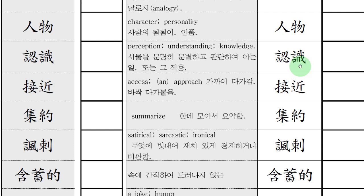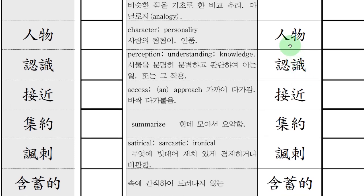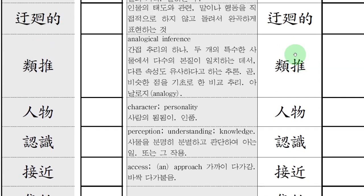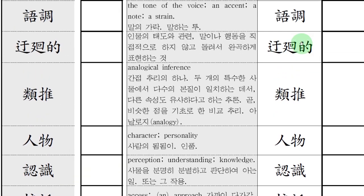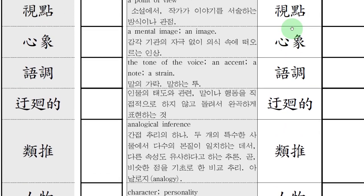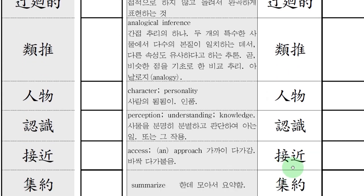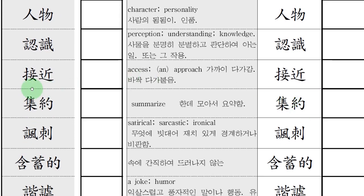위로 한번 읽어볼까요? 인식. 인물. 유추. 우회적. 어조. 심상. 시점. 그 다음 단어 뭘까요? 접근. 이 접 자도 가만히 보면 옆에 재방변 옆에 안에 첩첩자가 붙어있는 거지. 근 자는 가까울 근 자지요? 가까이 다가가 바짝 다가 붙어있는. 접근한다. 그러죠?